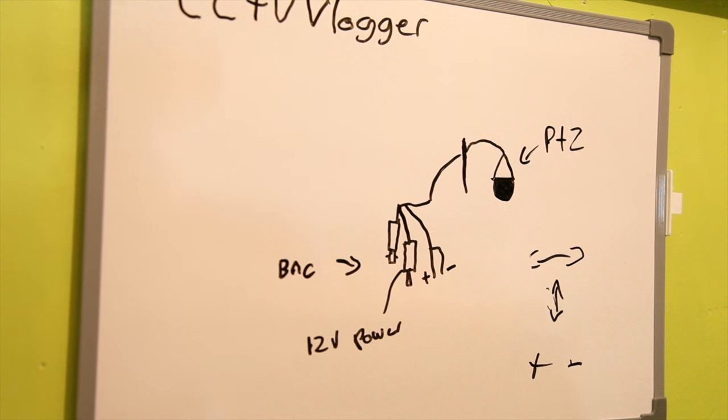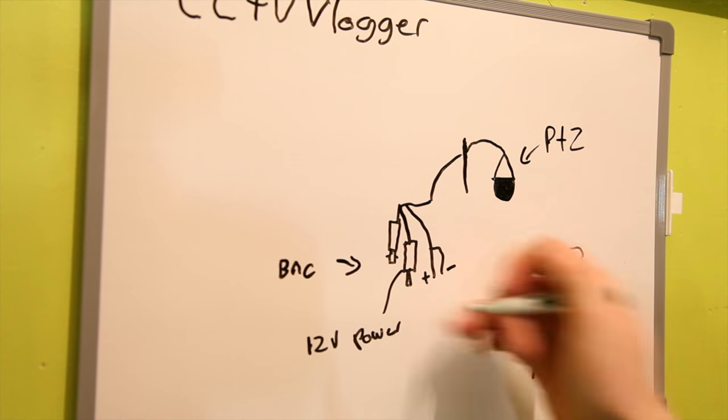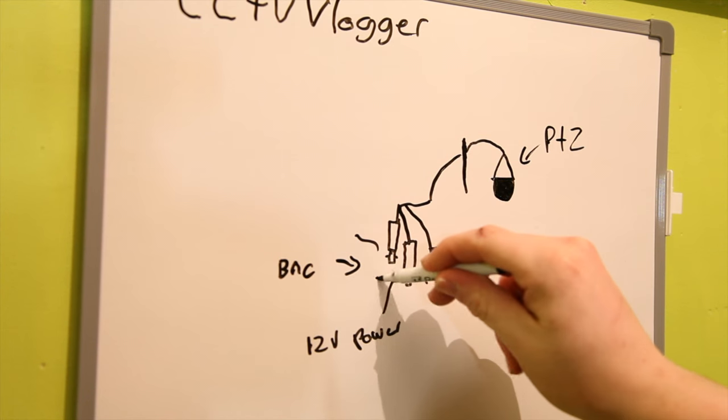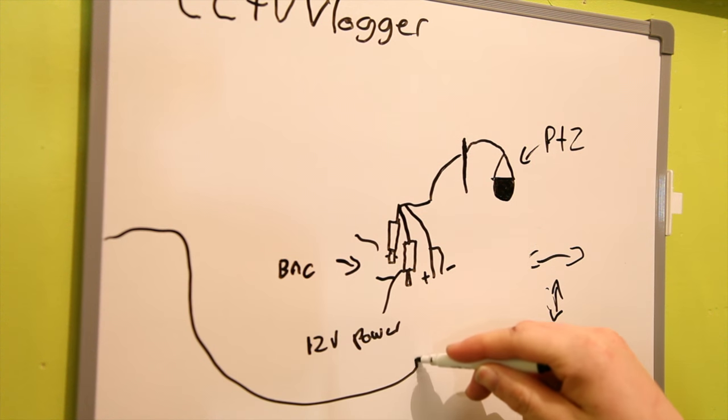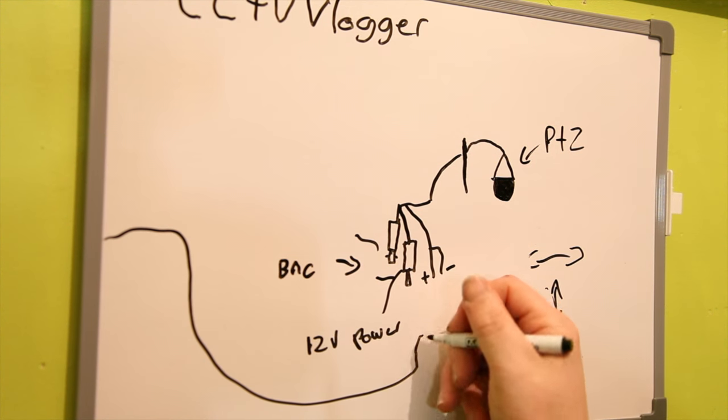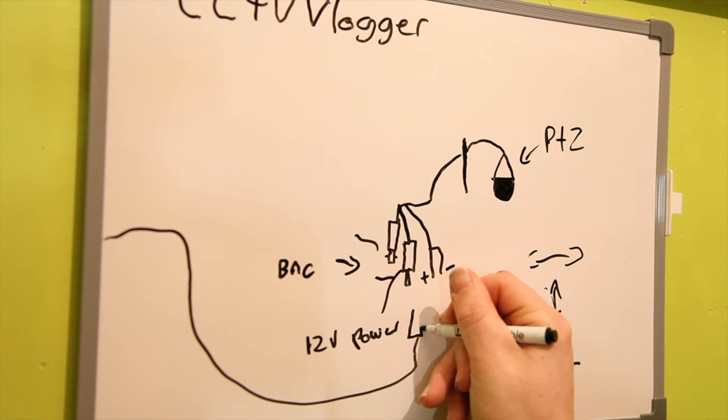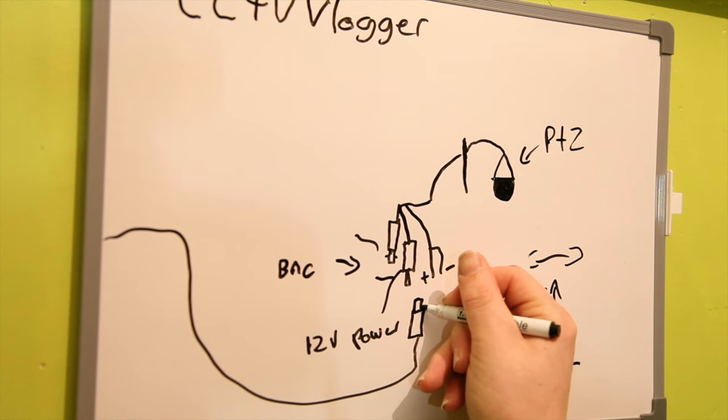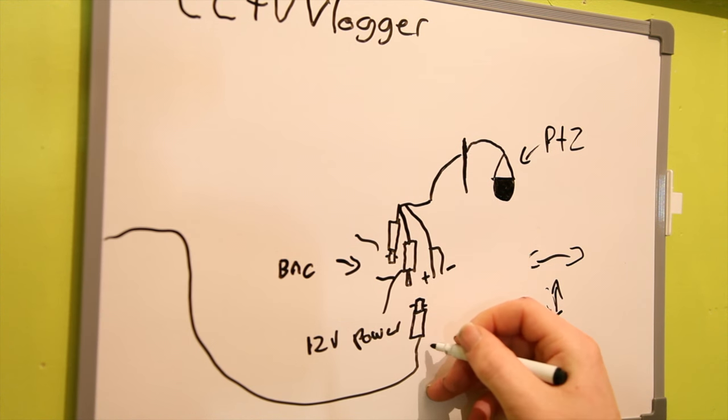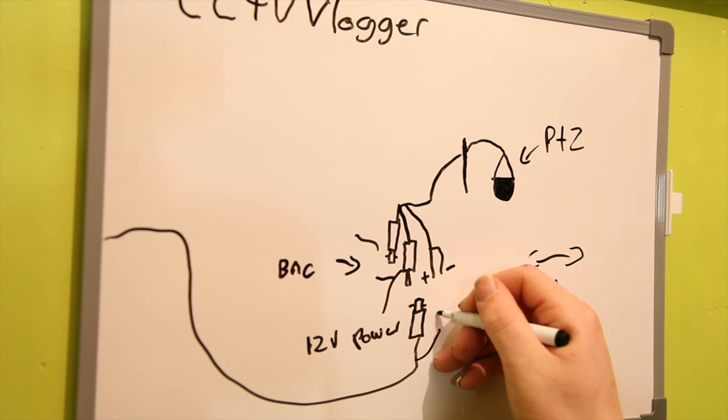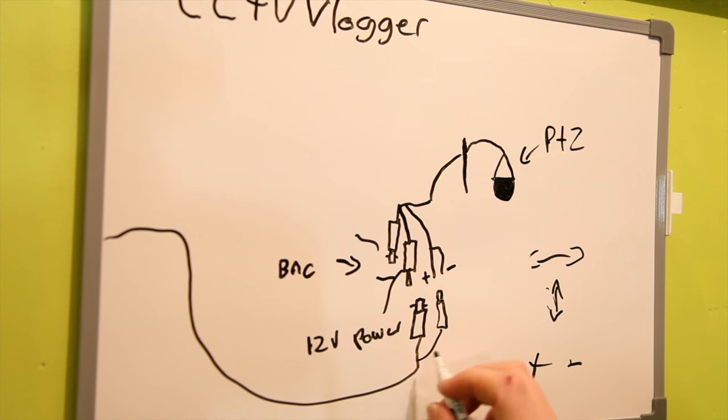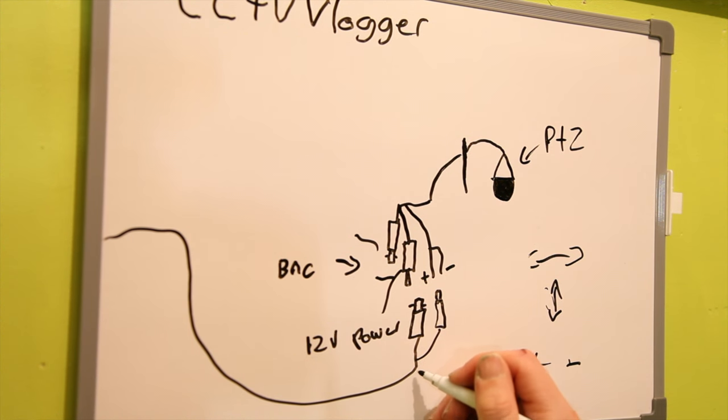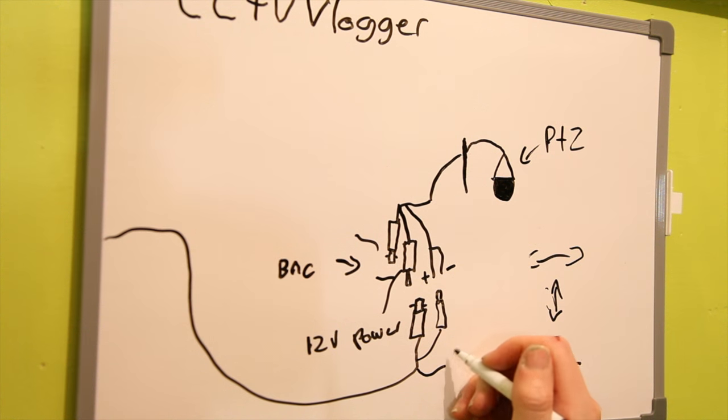What you want to do is connect your BNC and your power to your normal big cable. So this is the big cable, and that'll have a BNC, it'll have the power, and if you get a PTZ cable, it will have the RS485 as well.